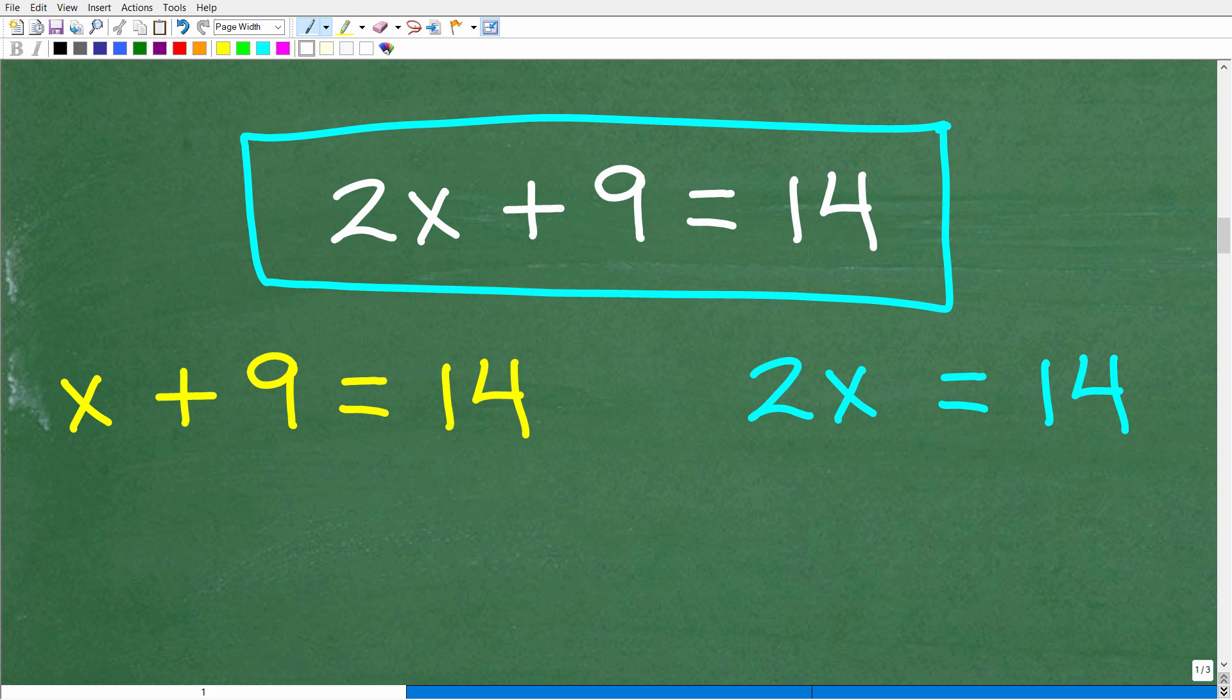Alright, so let's see if you can solve these two equations here. x plus 9 is equal to 14 and 2x is equal to 14. Alright, so x plus 9 is equal to 14. What do we need to do to solve for x? Well, here we want to get x equal to itself, right? So the golden rule of algebra is whatever you do to one side of the equation, you have to do the exact same thing on the other side. So I want x by itself, but here I have x plus 9.